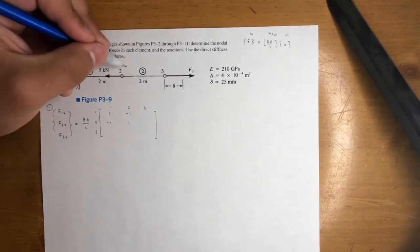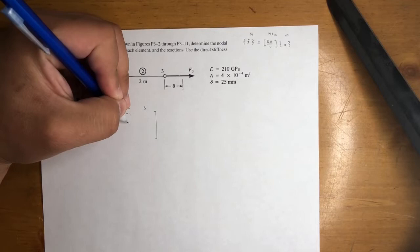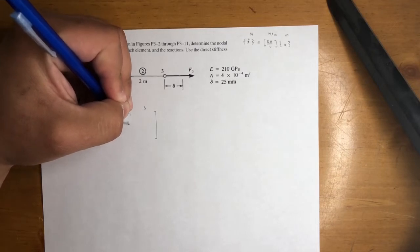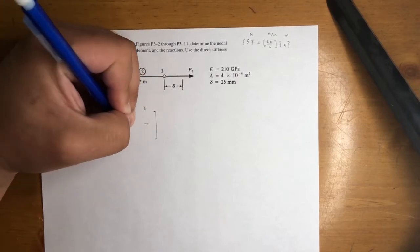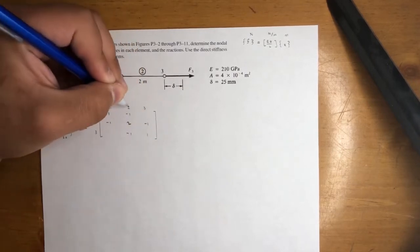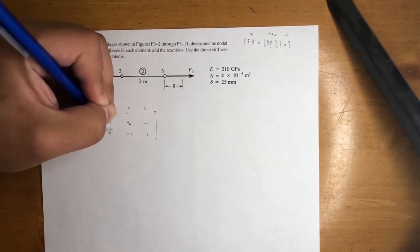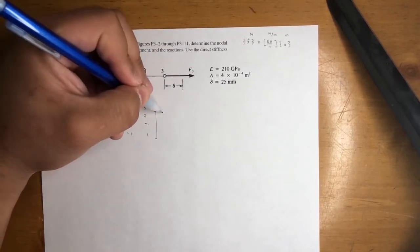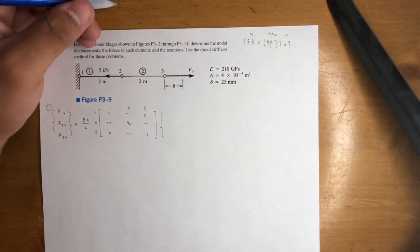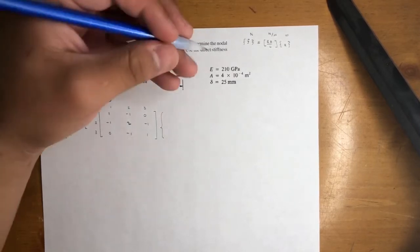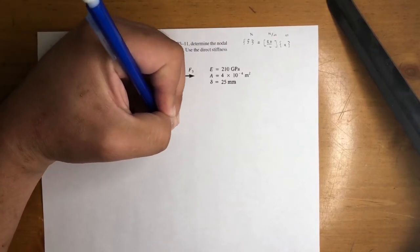Now for the second element, it's between nodes two and three. So we add one to the appropriate positions — the (2,2) entry becomes 2, then -1, -1, and 1 for nodes two and three. So those four spots give us the assembled global stiffness matrix. The displacements are U1, U2, and U3.